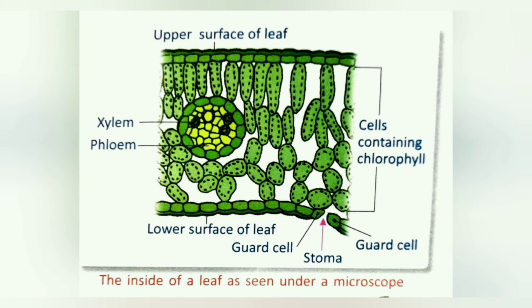These cells contain a green pigment called chlorophyll, which makes the leaves green. The lower surface of the leaves contains many tiny openings called stomata, and each stoma is guarded by two guard cells. These guard cells help in the exchange of gases and water vapor between the leaf and the surrounding air.